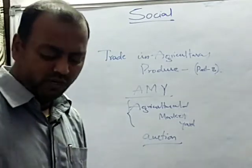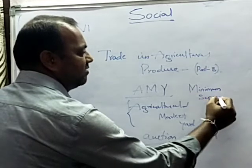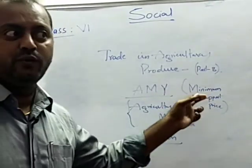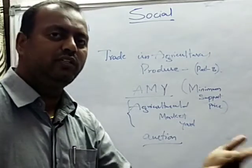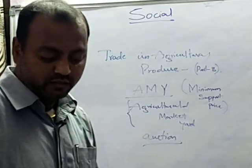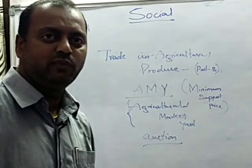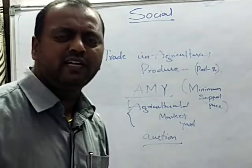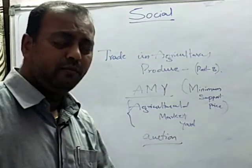The minimum support price — MSP — is the price the government decides per quintal of paddy. Below this, you are not supposed to sell. The government announced 1,080 rupees per quintal, and the committee officials began the auction from that price. The auction starts at 1,080; somebody says 1,100, somebody says 1,120 — and like this, the auction keeps going. Every year, the government announces the MSP and the price may vary depending on conditions.